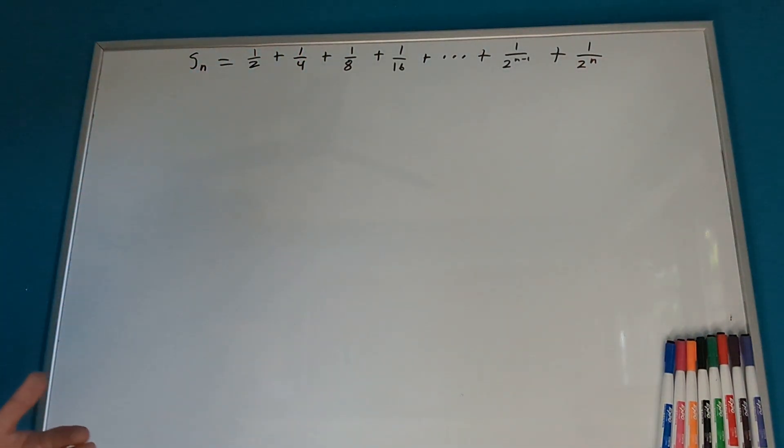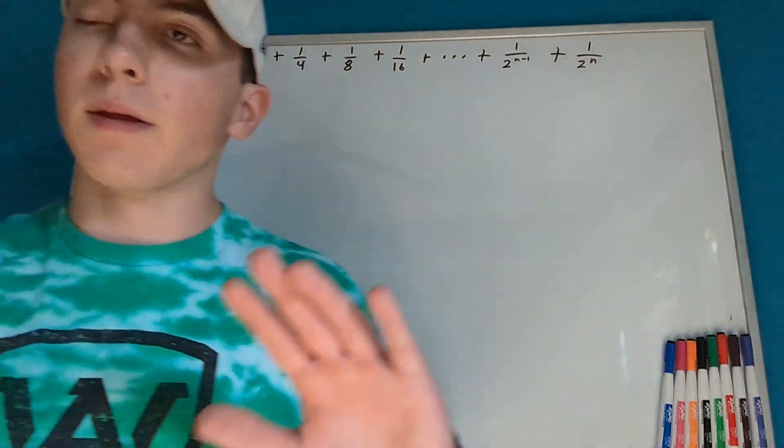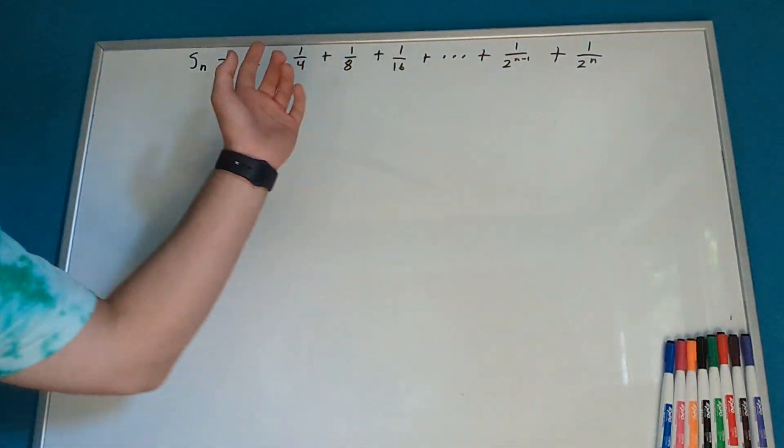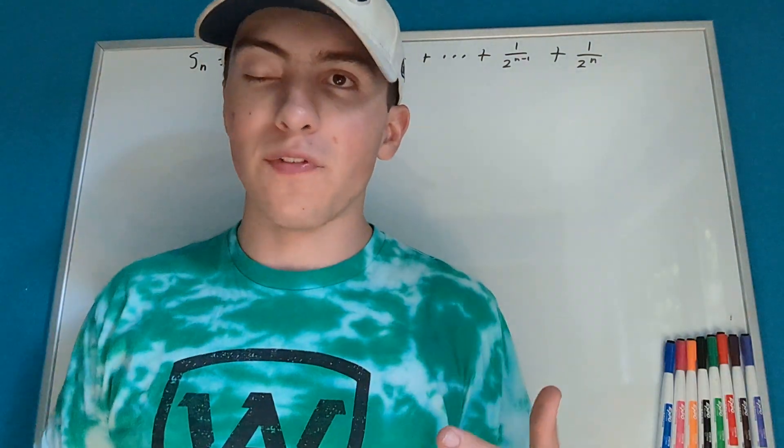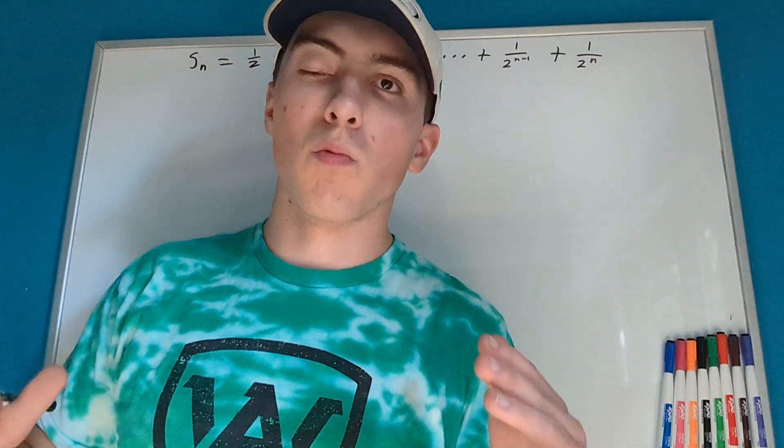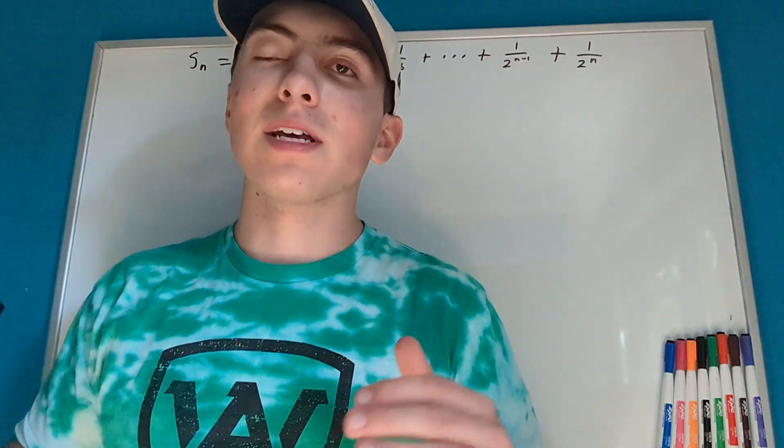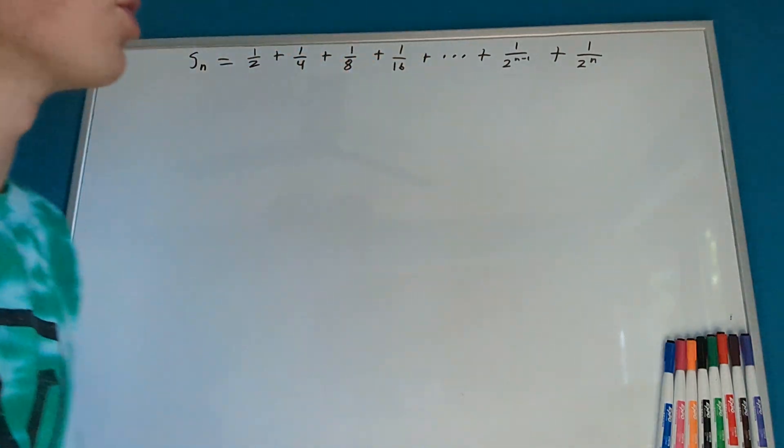If we have this series, and we add them all together, and we continue doing this with fractions that look like this, and we continue to do that up until infinity, I want to show you that that will be equal to 1. That means that this is a convergent infinite series.